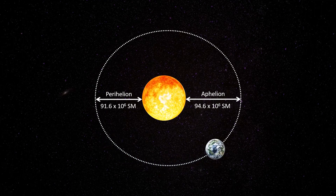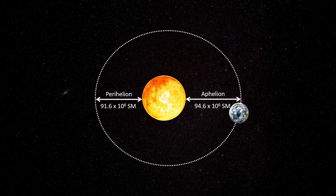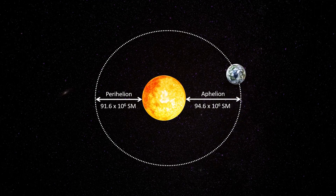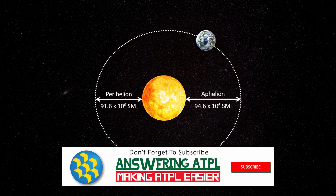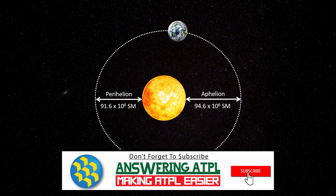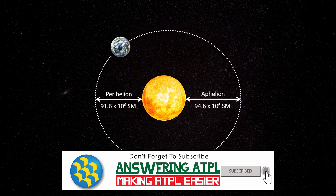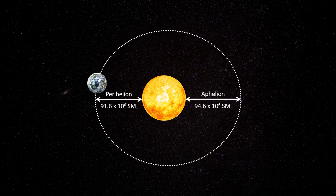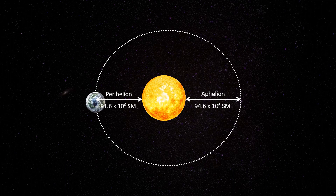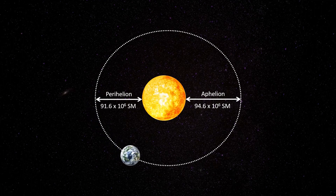When the earth is at aphelion in July, the furthest point from the sun, the northern hemisphere enjoys its summer season. This clearly shows that the variation of the distance of the sun from the earth is not a factor that determines the season.